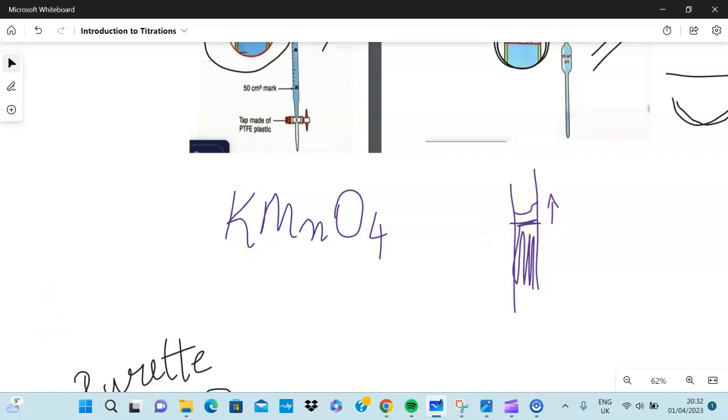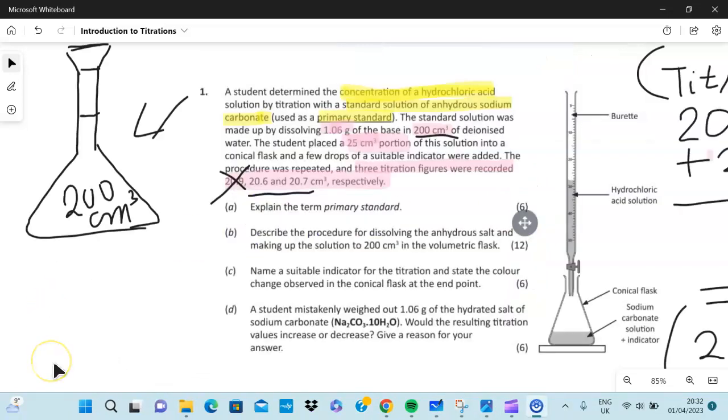Here's an example of a past exam paper and this is how I would approach it. First of all I would highlight all the important terms. You can see a student determined the concentration of hydrochloric acid, so concentration you need to know the definition. Standard solution, anhydrous sodium carbonate used as a primary standard, you need to know what's the primary standard. You can see the question here: explain the term primary standard.